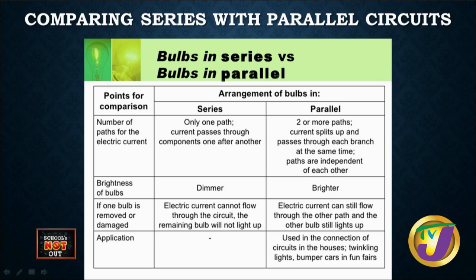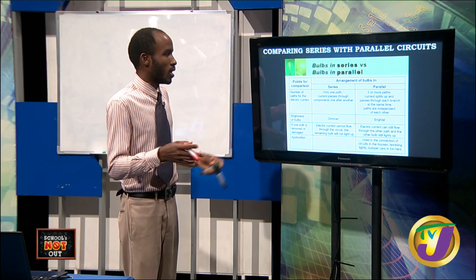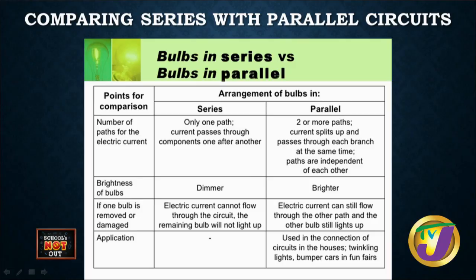Points to consider: In series, there's only one path; in parallel, there are two or more paths. In series, adding more bulbs makes them dimmer because there's less current. In parallel, adding more bulbs makes them brighter because adding components reduces resistance, allowing current to go up. If one bulb is removed in a series circuit, no current flows. In parallel, the other components keep working even if one blows. Applications of parallel circuits include house wiring, bumper cars, and automotive fuse arrangements.